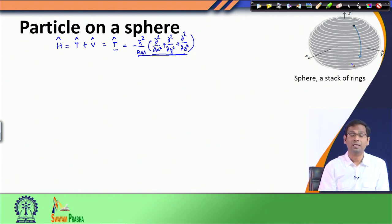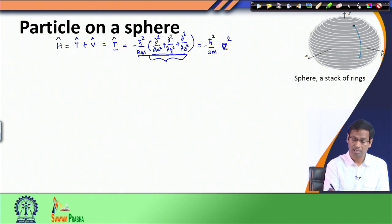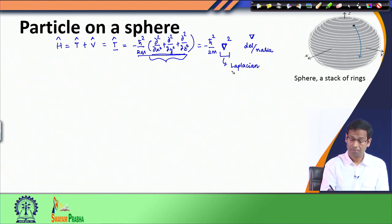However, since the particle is moving on a sphere, we want to convert this kinetic energy operator from Cartesian coordinates to spherical coordinates. There is a shorthand way to represent the Cartesian second-derivative sum: it is called del-squared (∇²), written as an upside-down triangle, also known as nabla. This operator — which involves second derivatives with respect to x, y, and z — is known as the Laplacian.